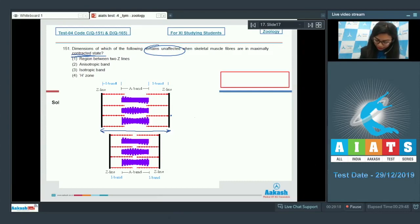Option number two, an isotropic band also known as A band. The length of A band remains unaffected when the muscle is contracting or has maximally contracted, so A band remains unaffected. This is the right answer.